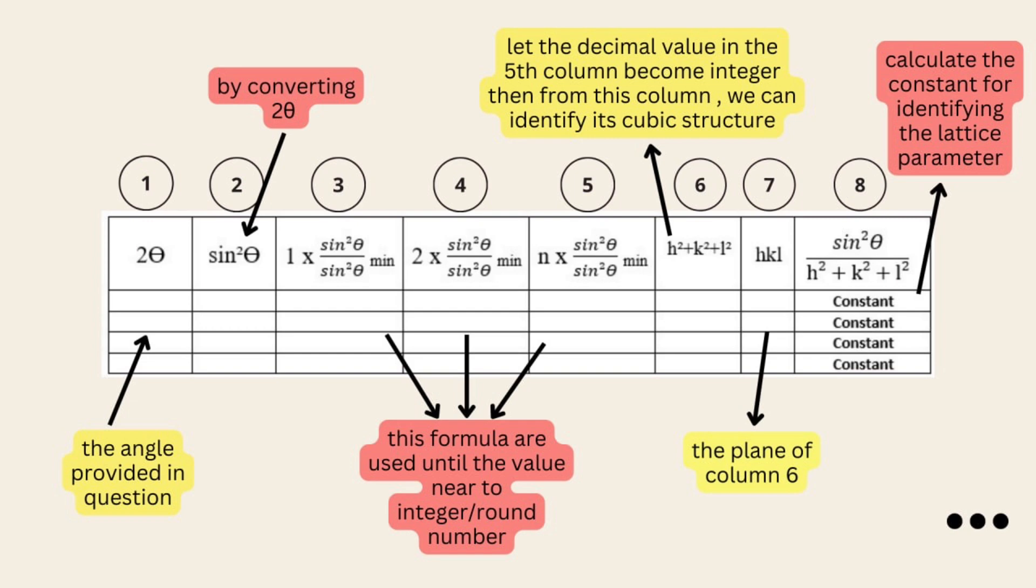Firstly, we need to identify the two theta peaks and then determine sin squared theta in degrees. For the third, fourth, and fifth columns, we need to calculate the ratio of sin squared theta divided by sin squared theta with a minimum value among the given data and multiply it by 1, 2, and 3.